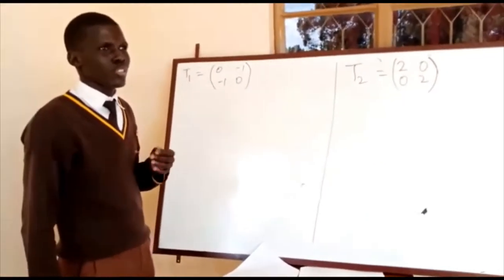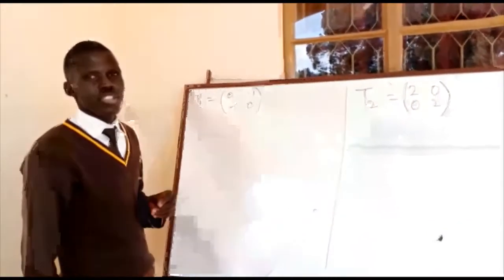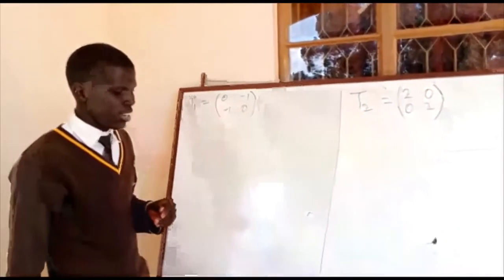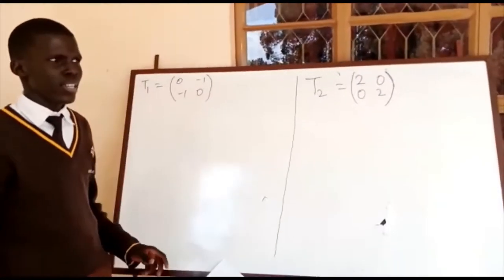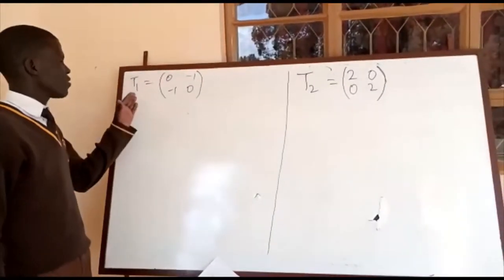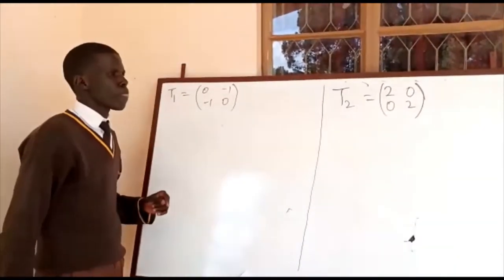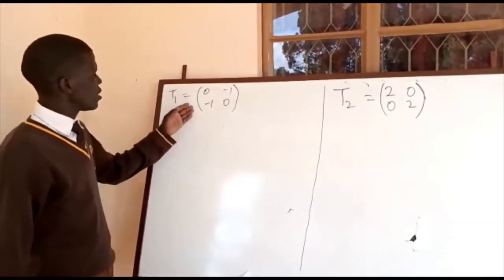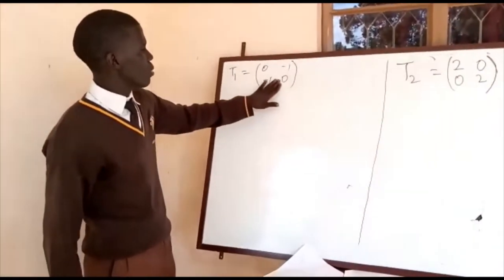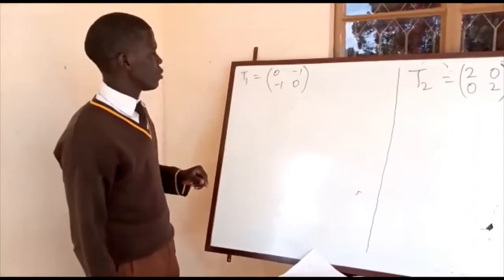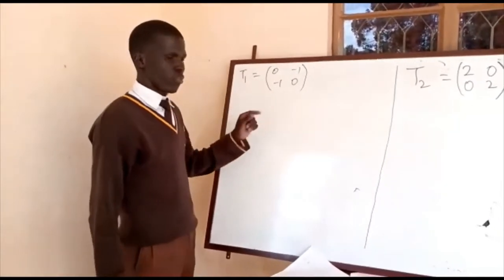My name is from Centenary School in Chitovoo and I'm glad to take you through number seven, part A. For part A, we need to describe the translation T1. If we look at this transformation critically, we observe that it is likely to be a reflection, and we are now going to prove whether there is a reflection and find the line of reflection.